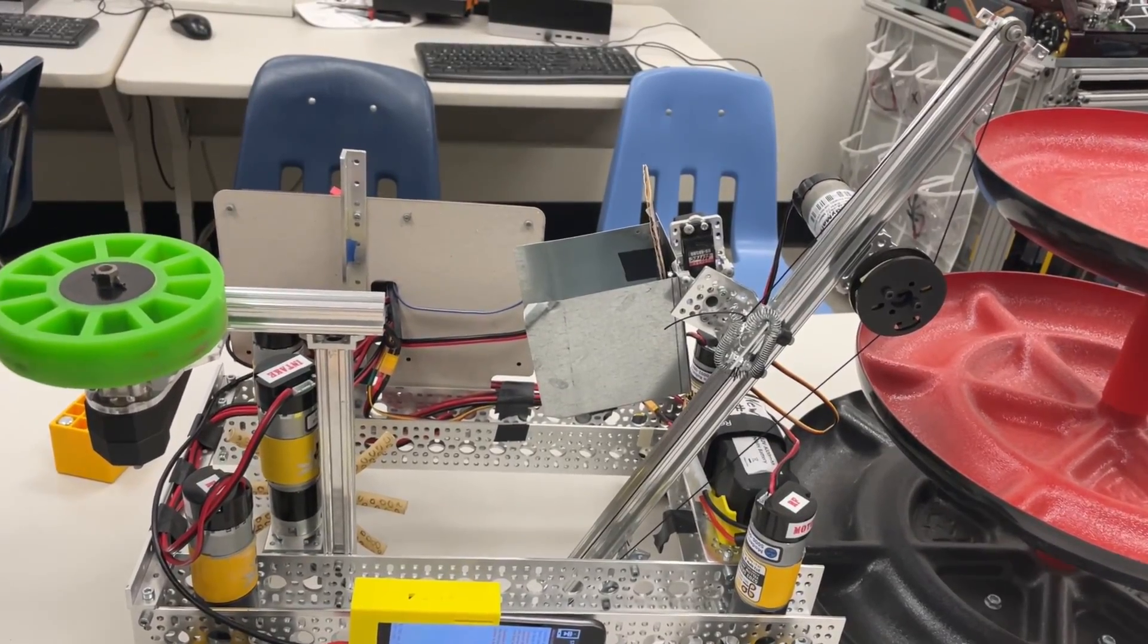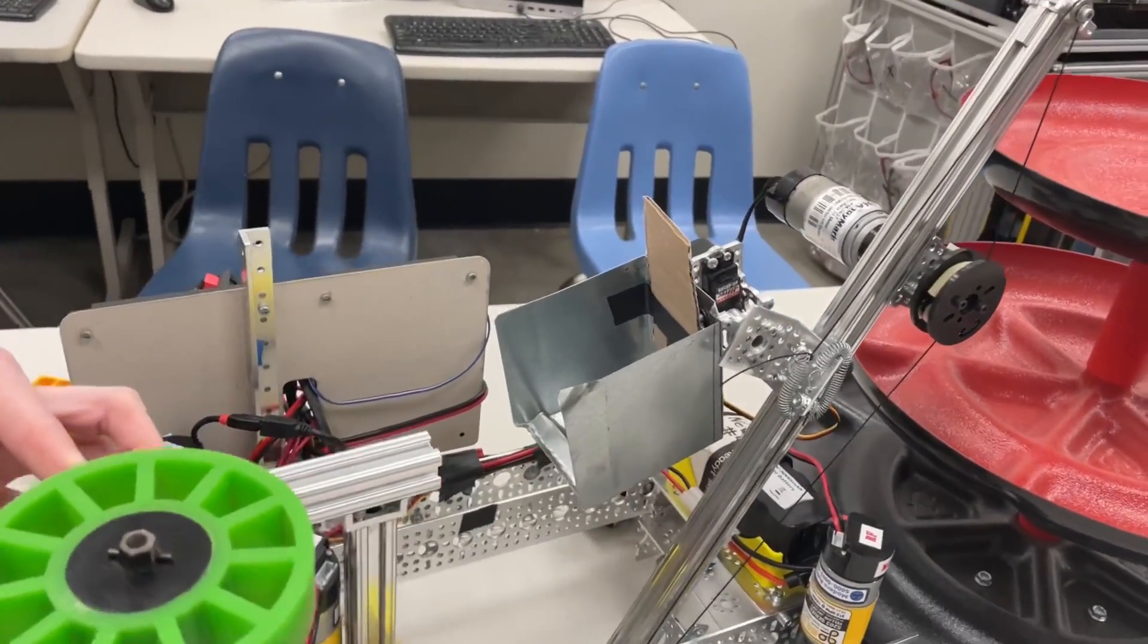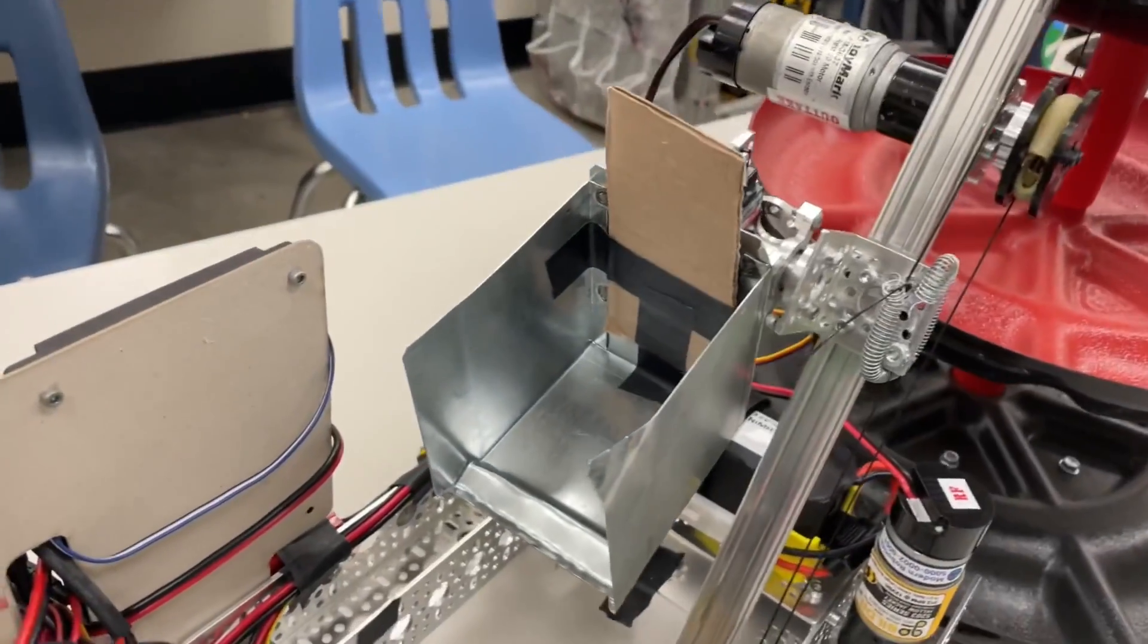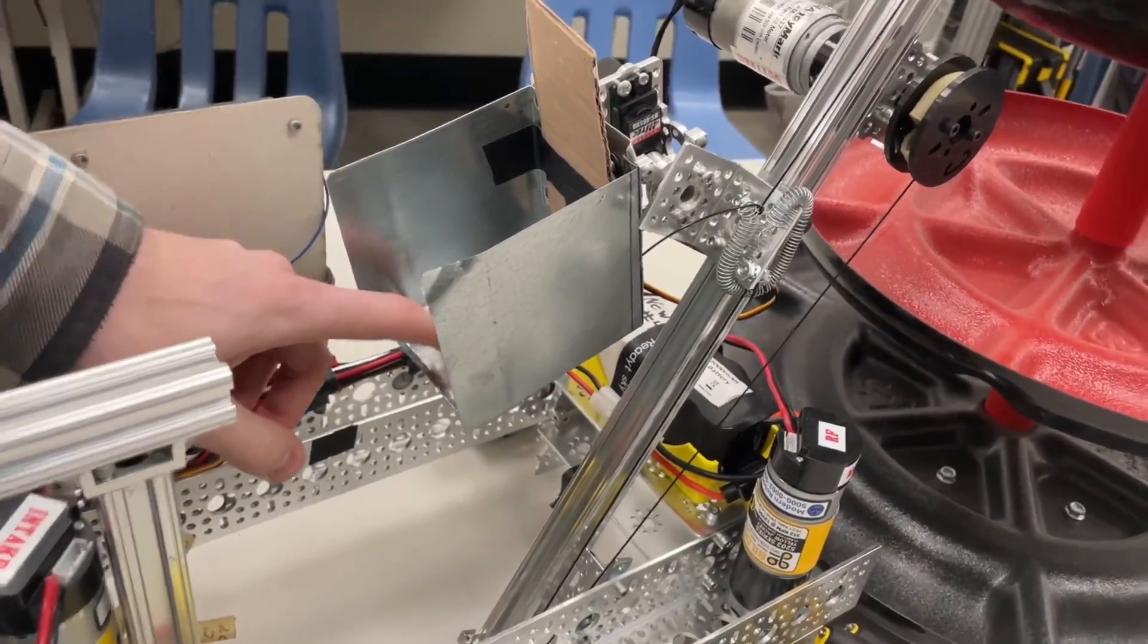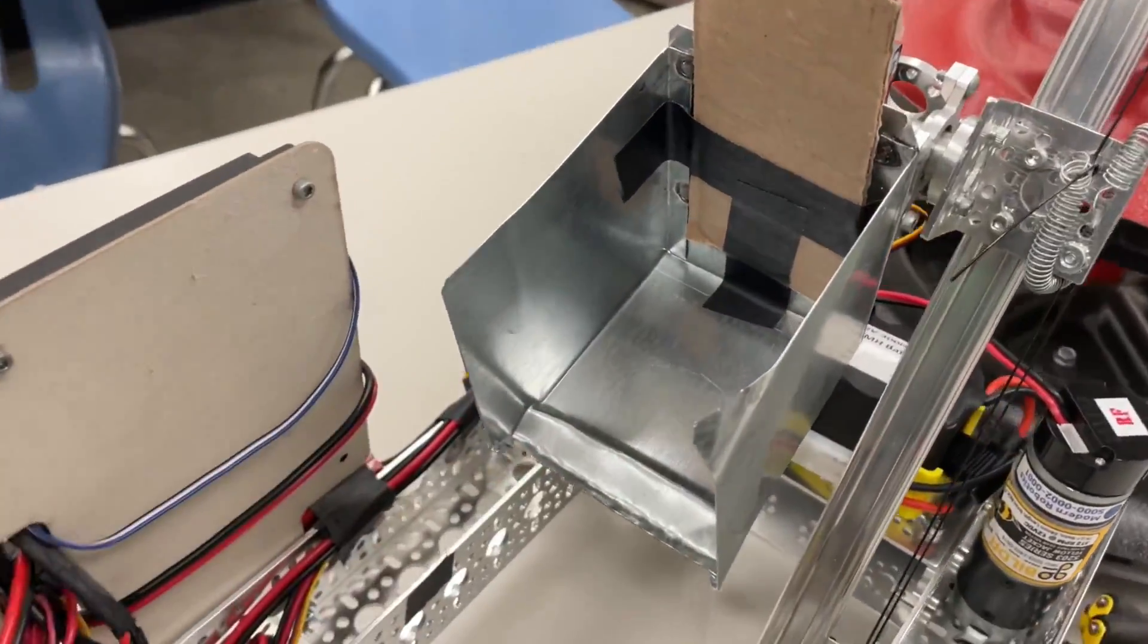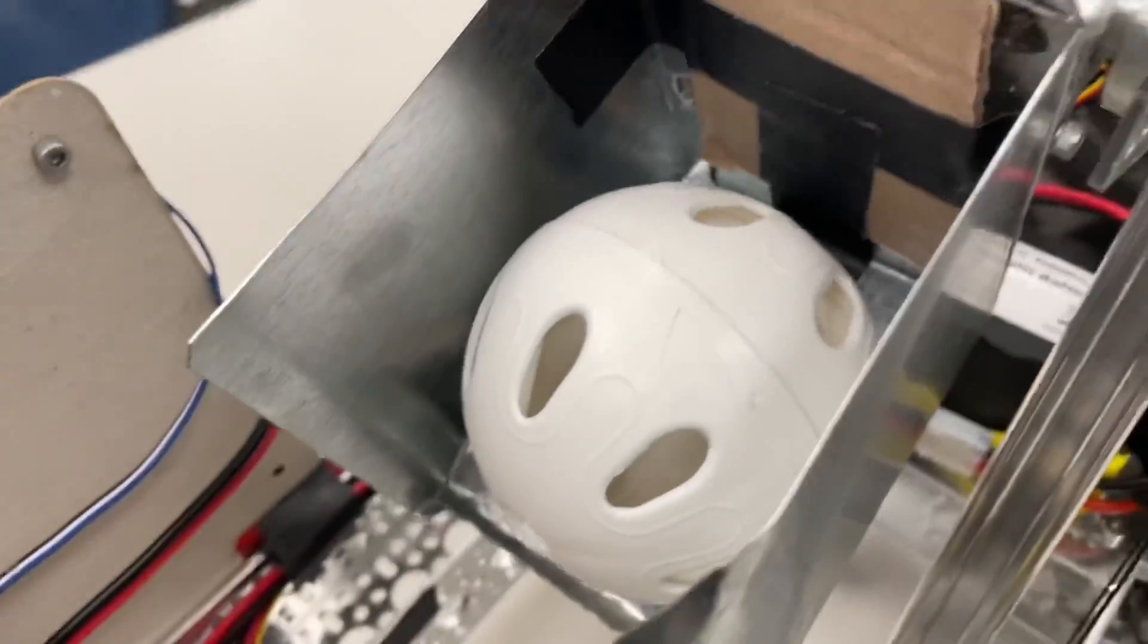For our bucket design, we made it out of sheet metal. We tried making it out of cardboard first, which worked, but we wanted to make it lighter and stronger. We have a lip in here so that once the freight goes in, it doesn't fall back out.